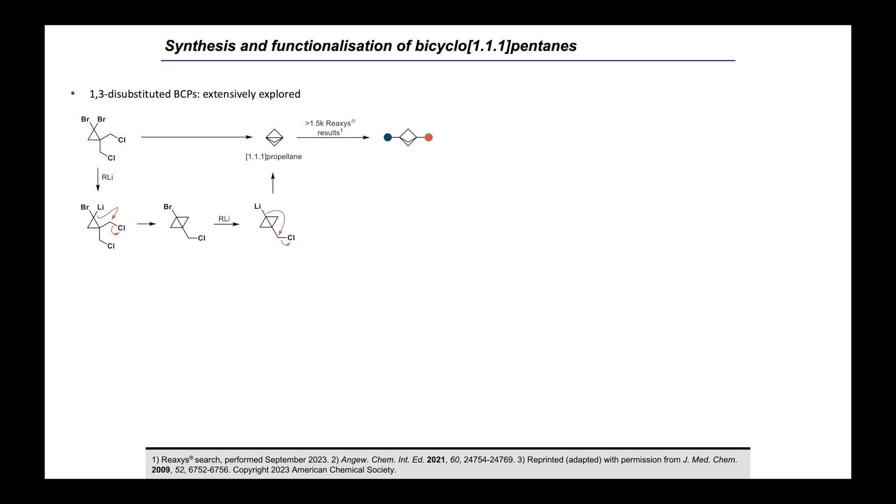In terms of their synthesis, BCPs with only bridgehead substituents, as replacements for monosubstituted or para-disubstituted arenes, are relatively straightforward to access. The majority of these methods start from [1.1.1]propellane, which in turn is accessed from this commercial tetrahalide on the left, by treatment with two equivalents of an organolithium reagent. From there, there's a whole range of radical and polar processes in the literature, some of which are discussed by Isaac Qin in his video, to open up the central bond of this propellane to give the corresponding bicyclopentane.